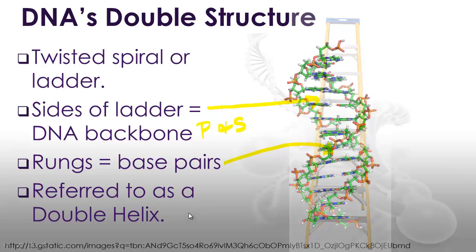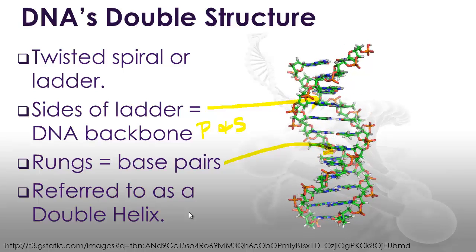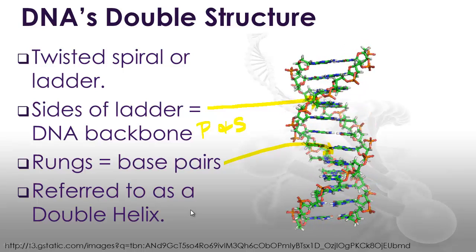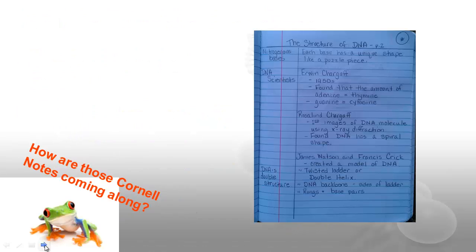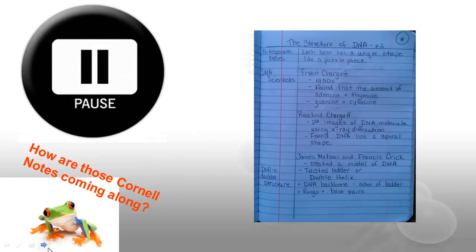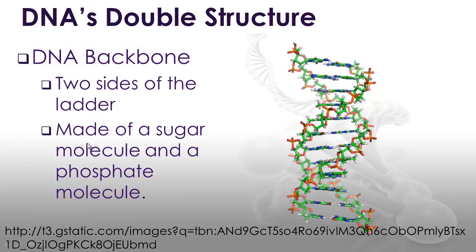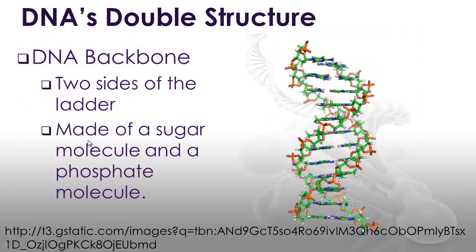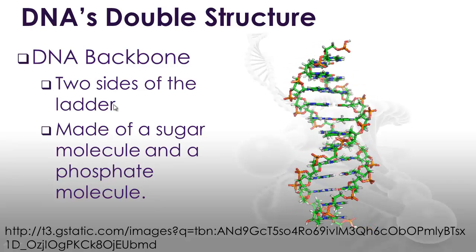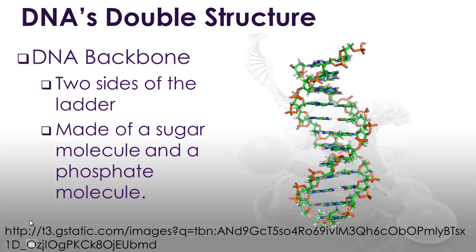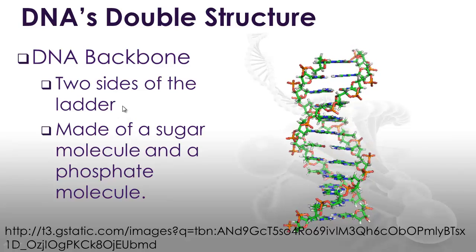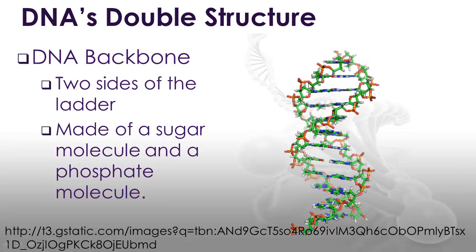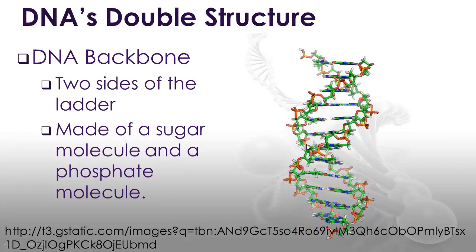And that's the shape we recognize as the basic shape of the DNA molecule. How are those Cornell notes coming along? Press pause if you need to. Let's talk a little bit more about DNA's structure. There are two basic parts: the DNA backbone, which is the two sides of the ladder — you can see those going by here.